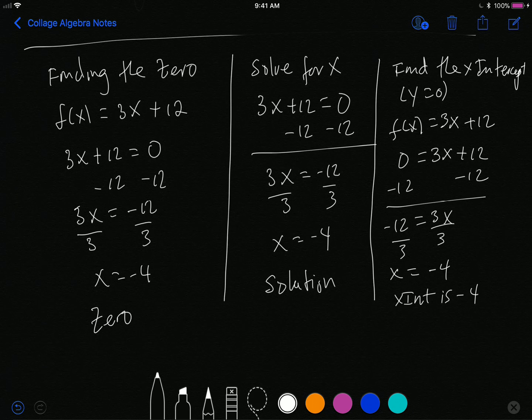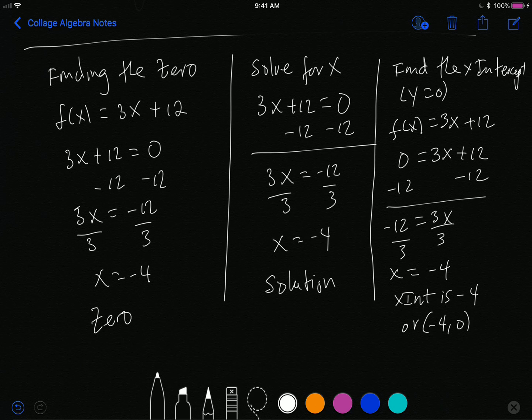So what we have is that the x-intercept is negative 4, or sometimes you write it as negative 4, 0. These three terms: zero, solution, and x-intercept, refer to the same value of a function, that number that when I plug it into the function I get zero.